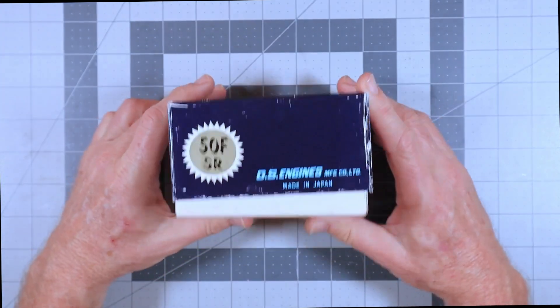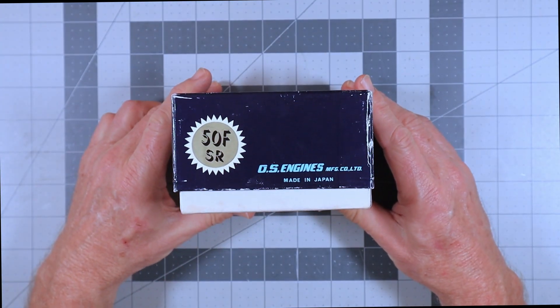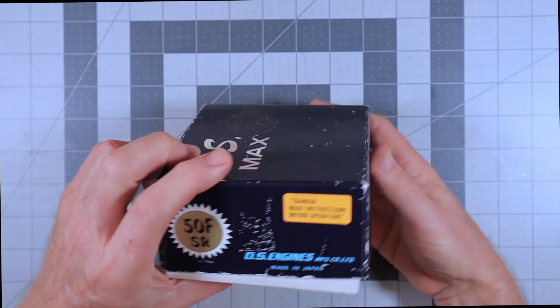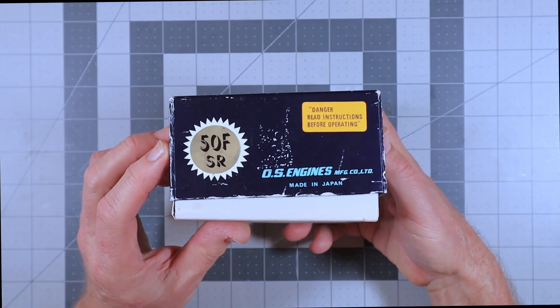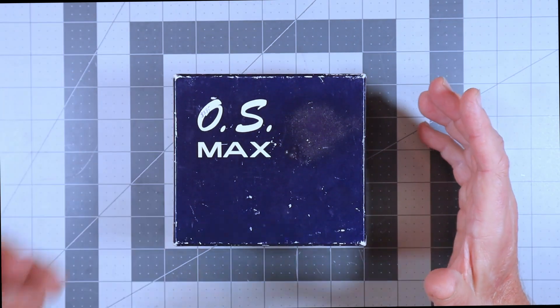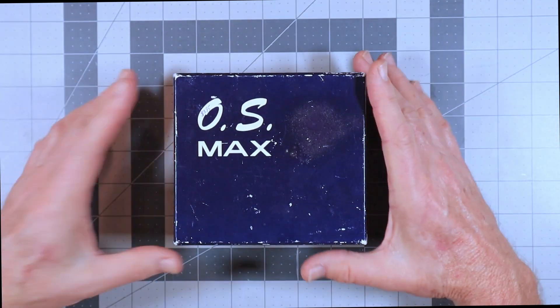Anyway, this is an OS-50 FSR engine. Now I have had one of these before, several years ago, I think it was in 2019, that a friend Reese had given to me. Now when he gave me that engine, he gave me the engine and the muffler but it didn't come with a box.